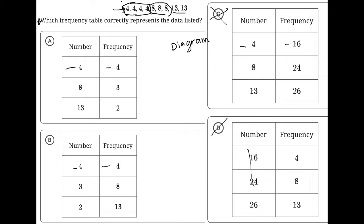And then we have three eights. Choice A has a frequency of three for the number eight, so that's good. But for choice B, there's a frequency of eight for the number three, which is incorrect. We need three eights. So based on that, choice A has to be the correct answer.